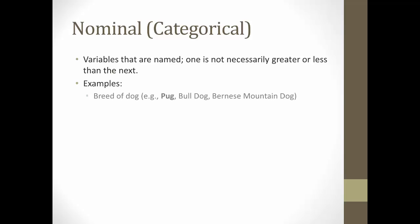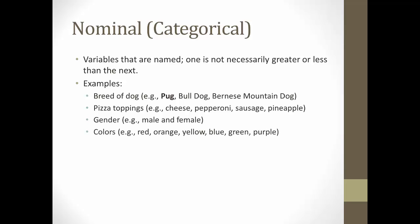For example, breed of dog like pug, bulldog, or Bernese Mountain Dog. Pizza toppings like cheese, pepperoni, sausage, pineapple. Gender, male and female. Colors: red, orange, yellow, blue, green, purple. And cookies like chocolate chip, peanut butter, snickerdoodle.